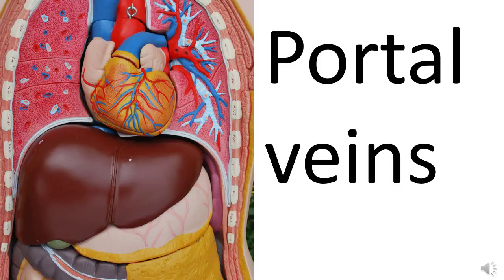The inferior vena cava takes the blood back to the right side of the heart, where it rejoins the systemic circulation. It's vital that the liver filters the blood before it gets back into the venous circulation - otherwise we'd all feel sick all the time. All that blood from the gut is taken directly to the liver in the hepatic portal vein so it can be detoxified.